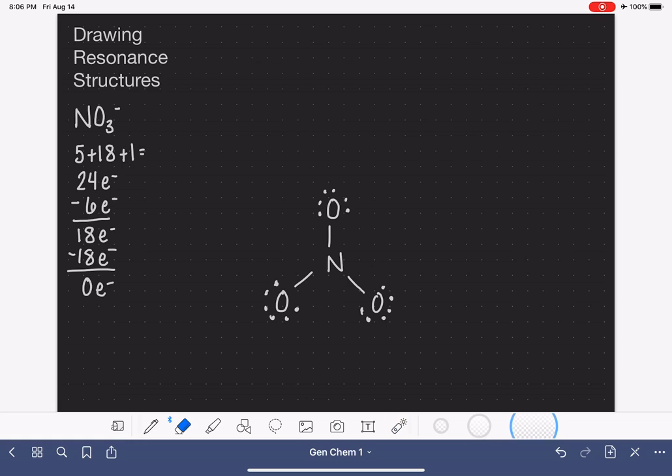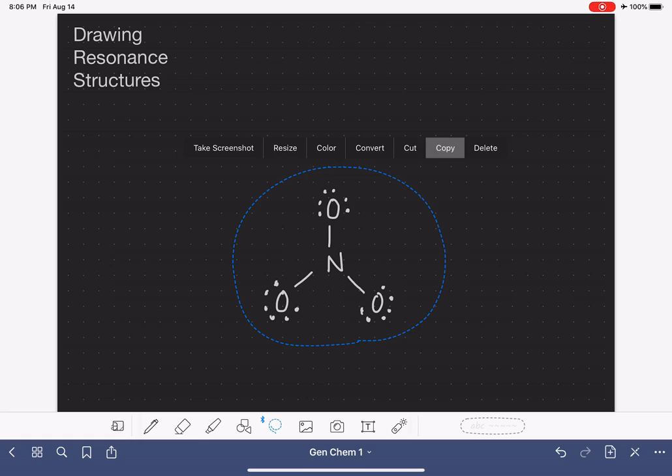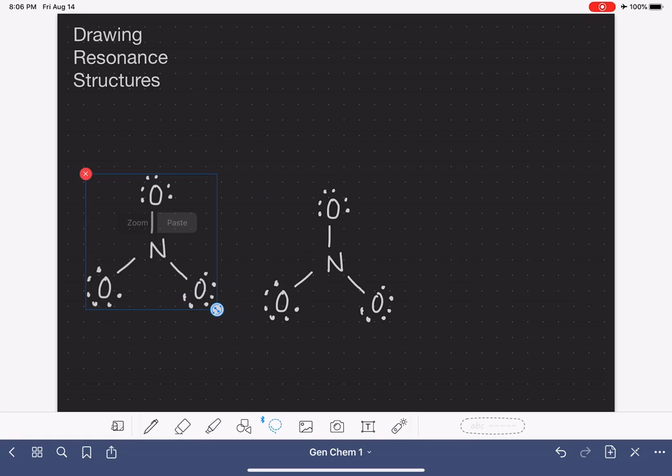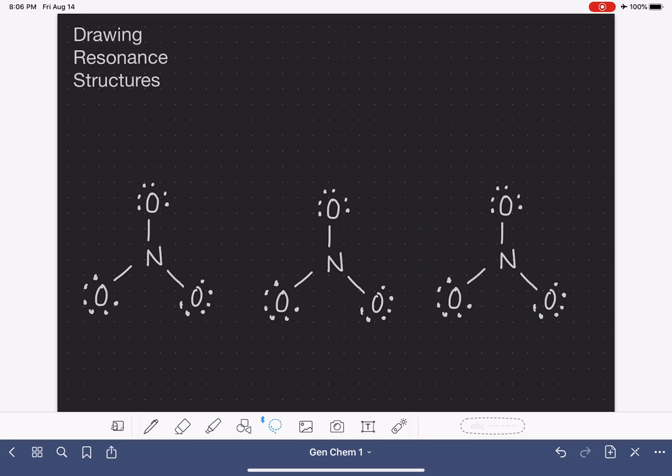And this is where we're actually going to start talking about resonance. So in this particular situation, we have to make a choice about which lone pair we are going to convert into a double bond. In a molecule like nitrate, we could choose to take a lone pair from the oxygen that I've drawn in the top of the molecule and use that lone pair to make a double bond.